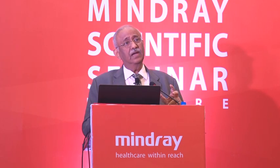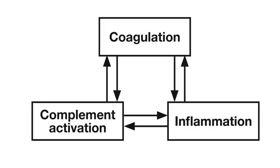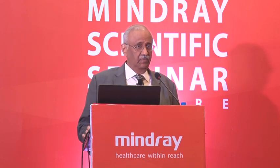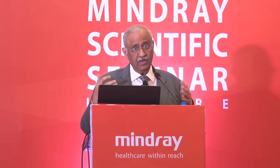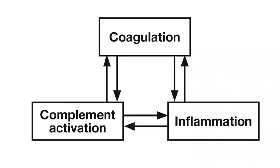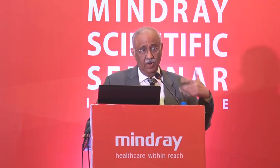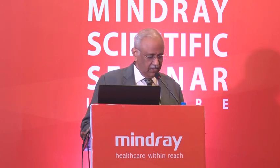In DIC it's not just coagulation that gets deranged — there are two more systems: complement activation, which can wreak havoc in the body, and inflammation. These three processes happen together. A lot of morbidity and mortality in DIC is not just because the coagulation cascade is activated, but also because of complement and the inflammatory system.